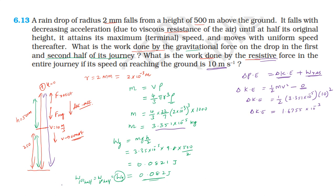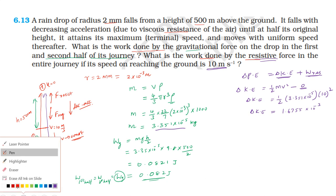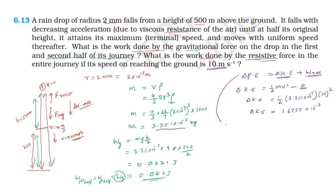Now we can find the work done by the resistive force. Work done by the resistive force equals increase in potential energy minus increase in kinetic energy. Increase in potential energy equals 0.082 J for the first half, so total over full journey is 0.164 J. The work done by gravity in the first half is 0.082 J.